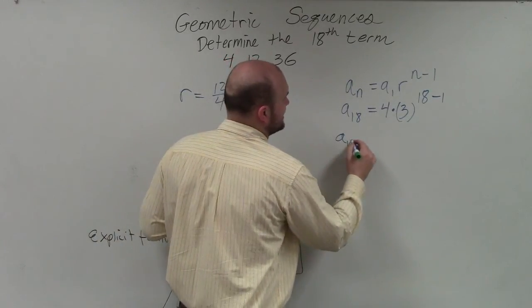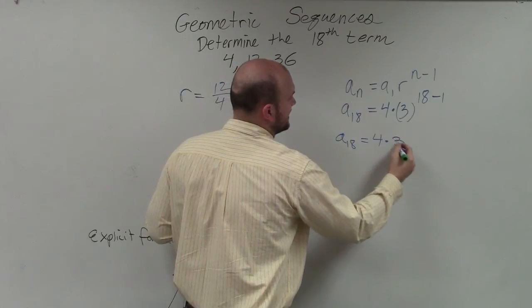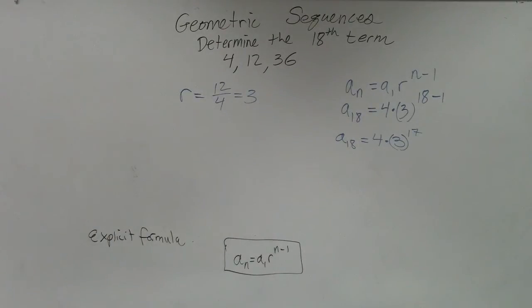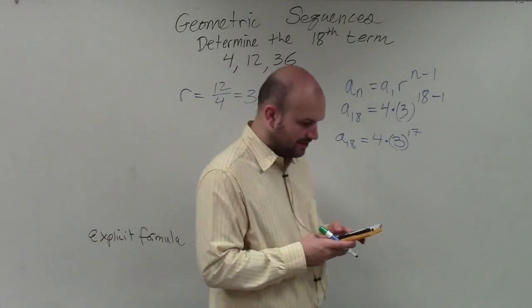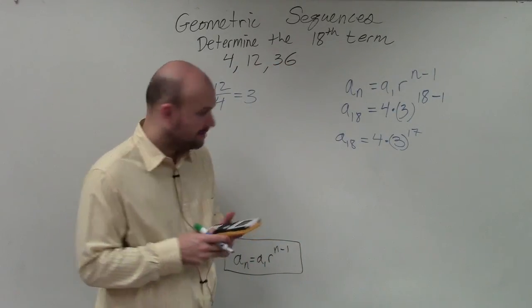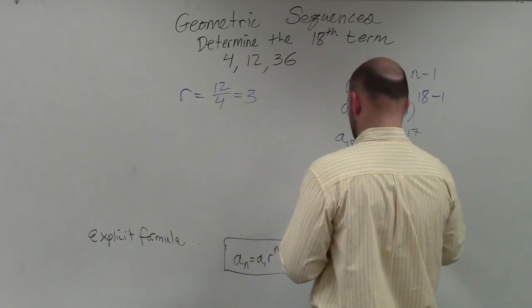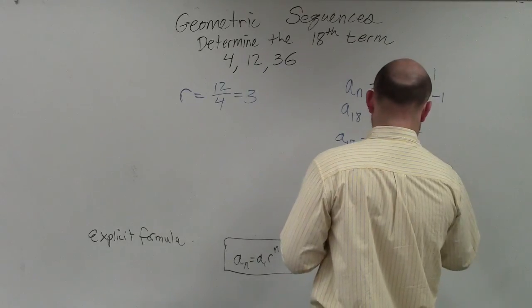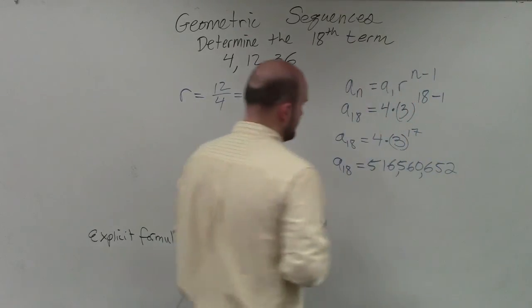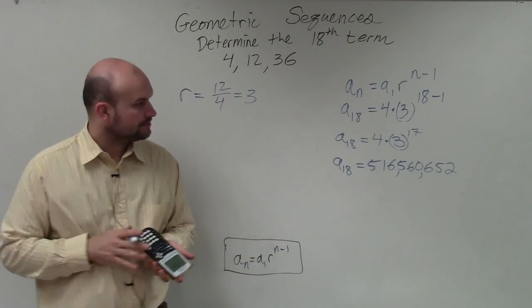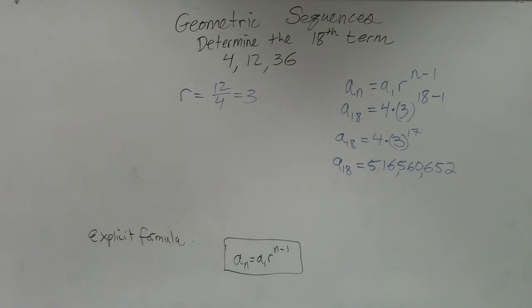So now I do a to the 18th equals 4 times 3 raised to the 17th power. Now you will need a little bit of a high power calculator here in this case. But I'll do 3 raised to the 17th power and then times 4. And what I get is a to the 18th is going to equal 516,560,652.